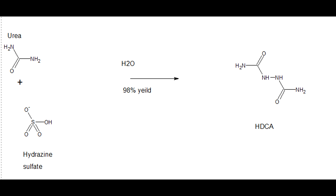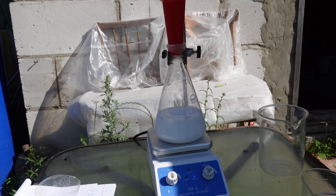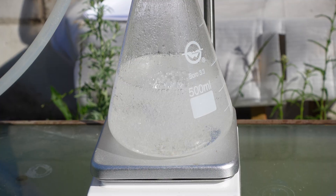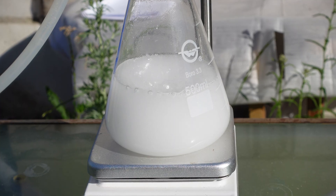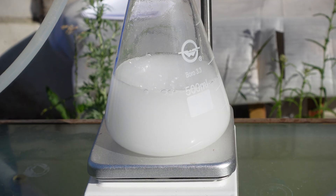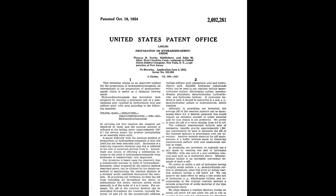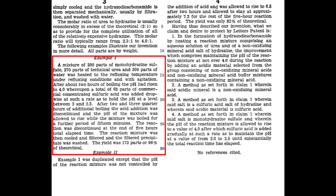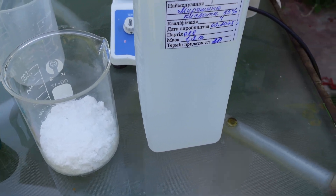The first stage is the synthesis of HDCA. It's very simple — I just mixed urea and hydrazine sulfate in water and boiled it for 5 hours. While boiling, the hydrazine sulfate first completely dissolves, and then HDCA begins to precipitate from the clear solution. With this reaction procedure, I obtained an 88% yield. To achieve a 98% yield, it's necessary to slowly drip sulfuric acid into the solution, maintaining the pH between 2 and 3, as described in a patent. Under no circumstances should you add too much sulfuric acid — if the pH drops below 2, HDCA will begin to decompose back into hydrazine sulfate. Here's my HDCA, filtered from the solution — just a white powder.